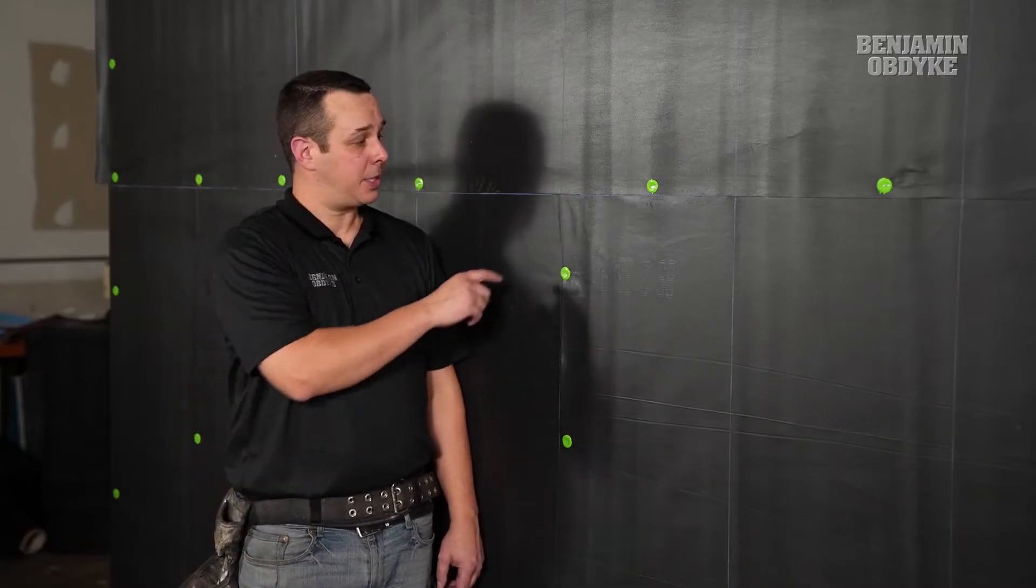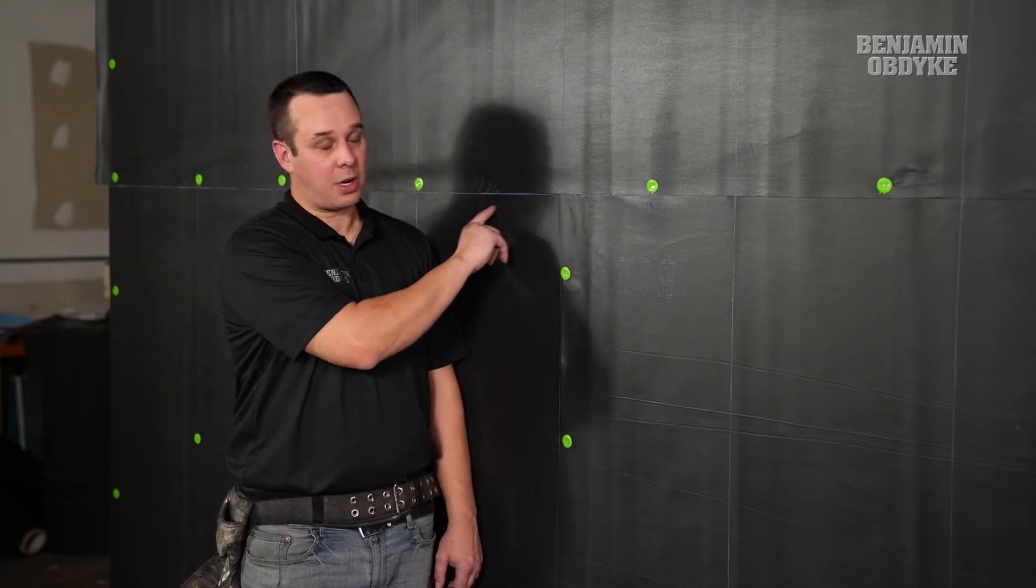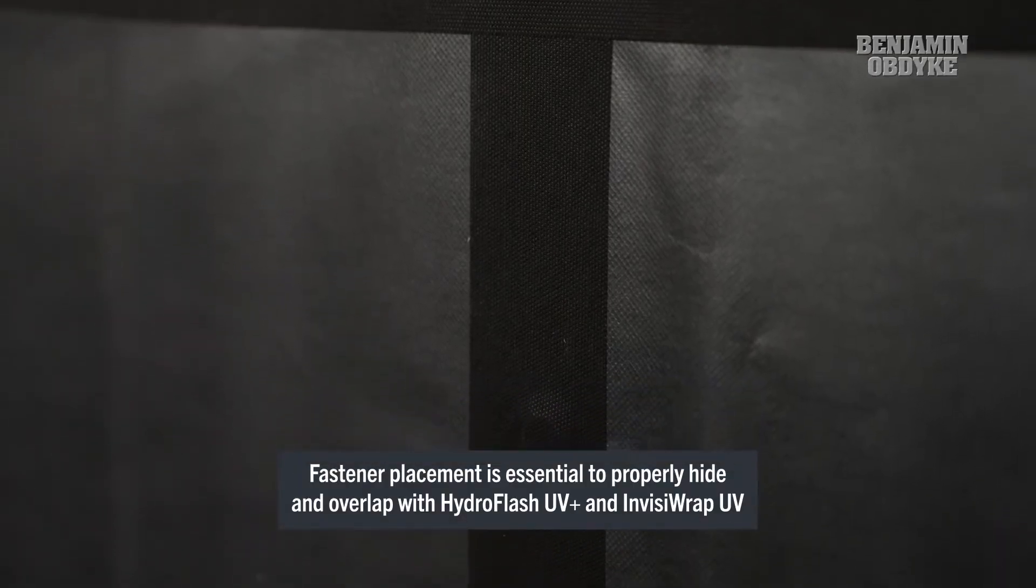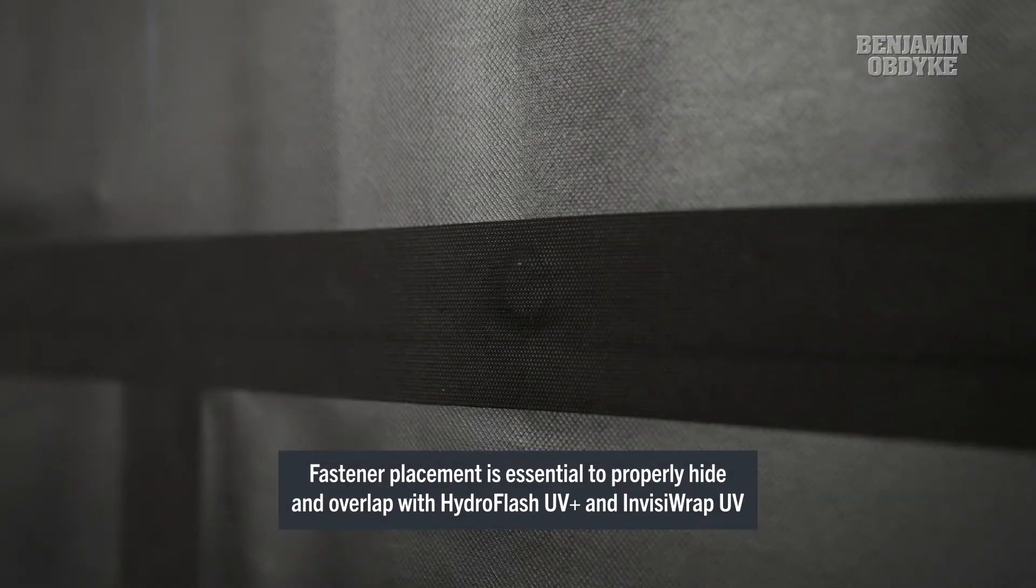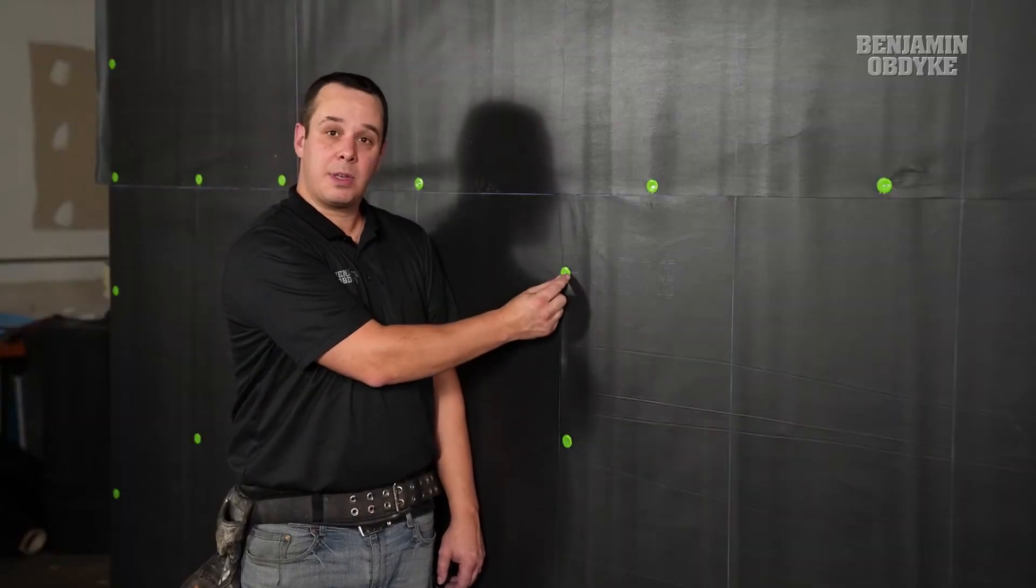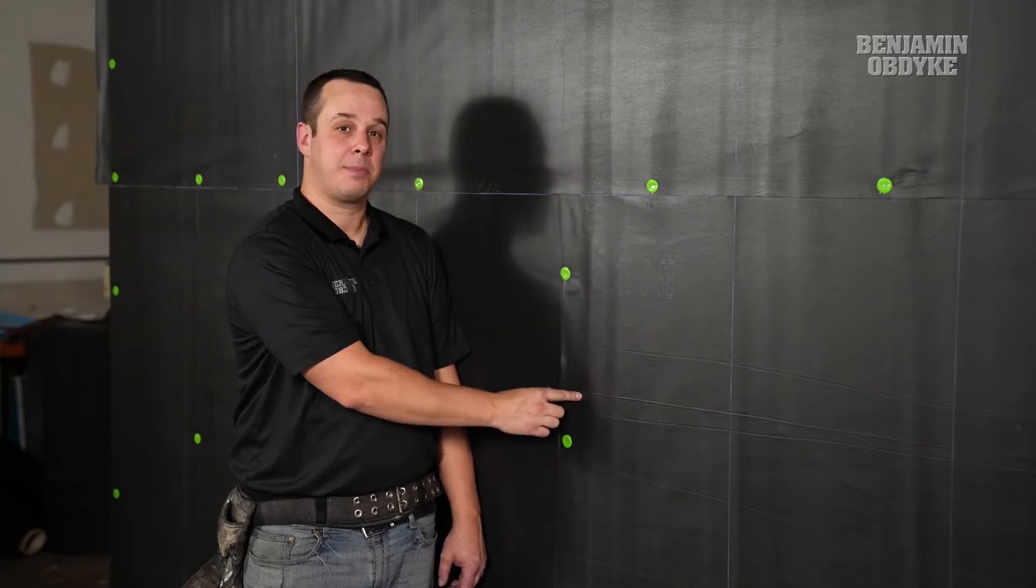InvisiWrap will be used as our water control layer, so we want to make sure that we tape all of the seams - both vertical and horizontal - with our Hydroflash UV Plus. We also want to hide as many of the fasteners as possible. When fastening at the edges, we want to keep the cap fastener close to the edge so that we can cover it with the seam tape.